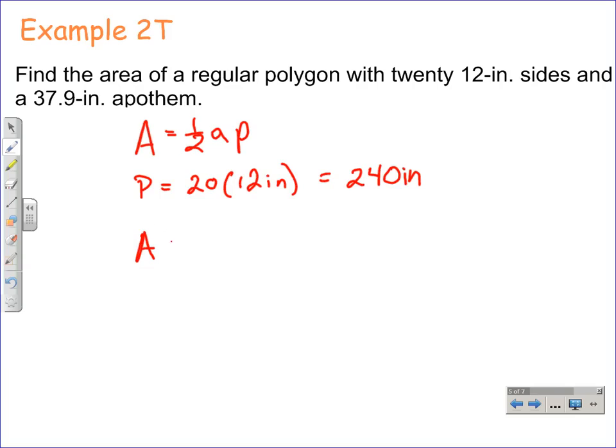Now to find the actual area, we're going to substitute in for a and p, the apothem and the perimeter. The apothem is 37.9 inches times the perimeter, which was 240 inches. And you can run that into your calculator if you want: 0.5 times 37.9 times 240, and that would be 4548 square inches.